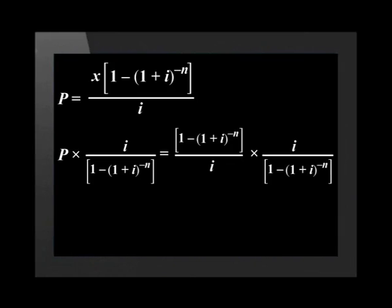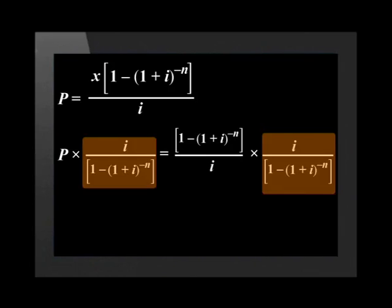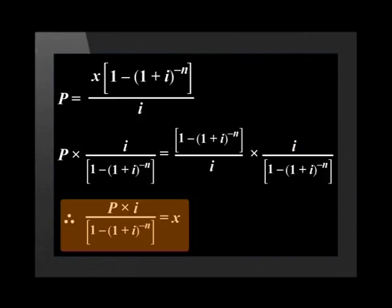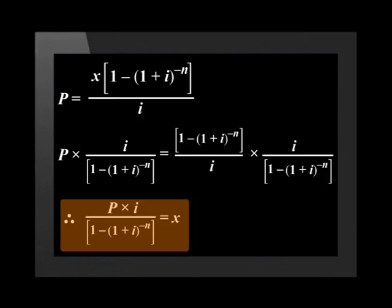To change the present value formula and get x alone on one side, we multiply both sides of the formula by i divided by open bracket one minus open bracket one plus i close bracket to the power of minus n. All the terms on the right-hand side will cancel except x. Therefore, x equals P multiplied by i divided by open bracket one minus open bracket one plus i close bracket to the power of minus n close bracket.